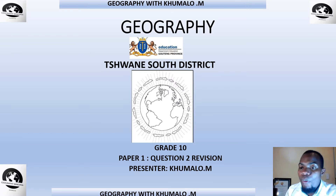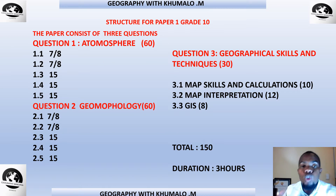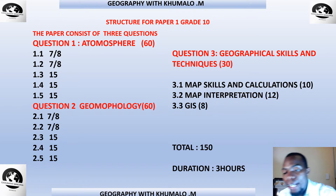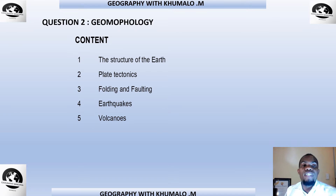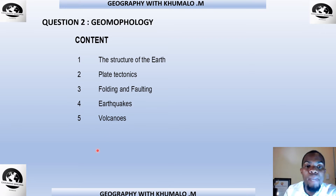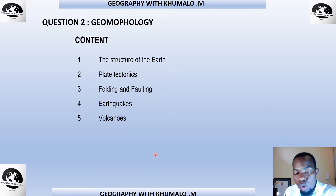Without further delay, remember from the previous video I showed you the structure of Paper 1 Grade 10 — it consists of three questions. Question 1 is atmosphere, which we've dealt with for 60 marks. Today we are dealing with geomorphology, Question 2, also out of 60 marks. Our paper is out of 150. The topics in Question 2 are: structure of the earth, plate tectonics, folding and faulting, earthquakes, and volcanoes — topics covered in Term 2.